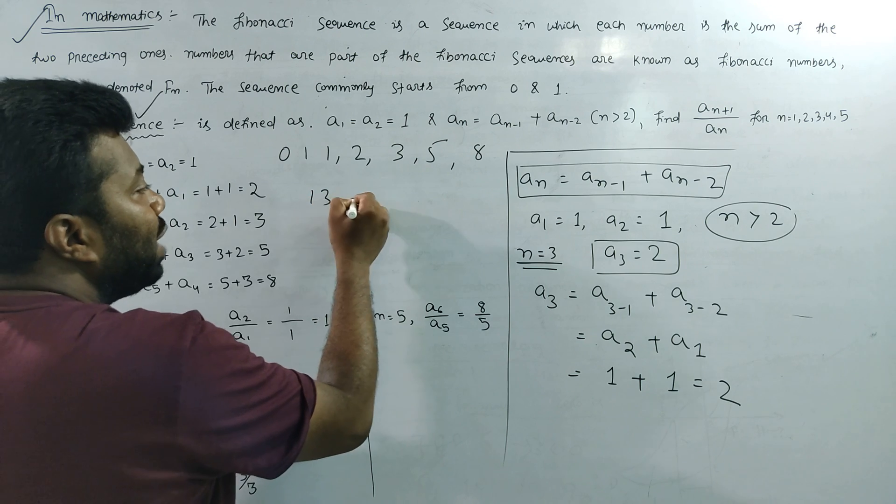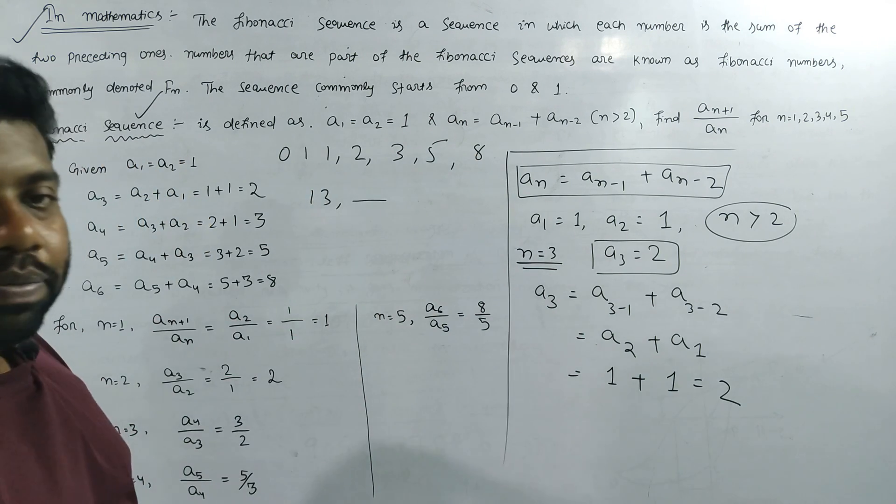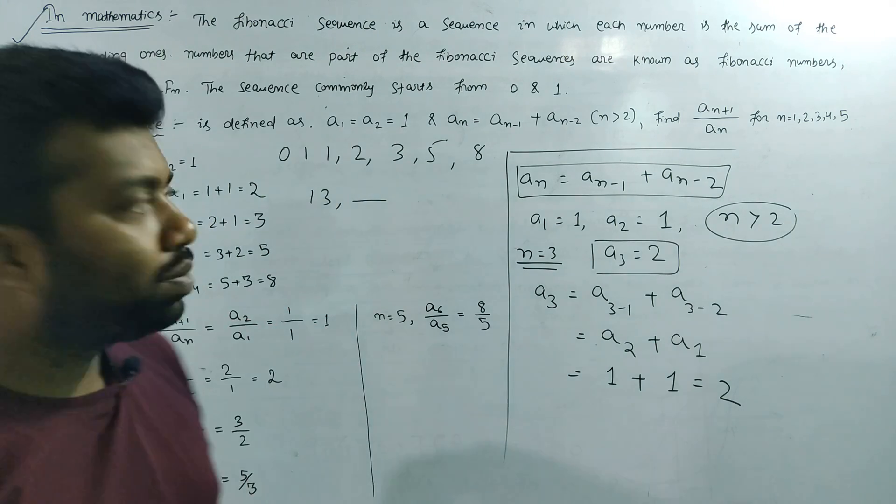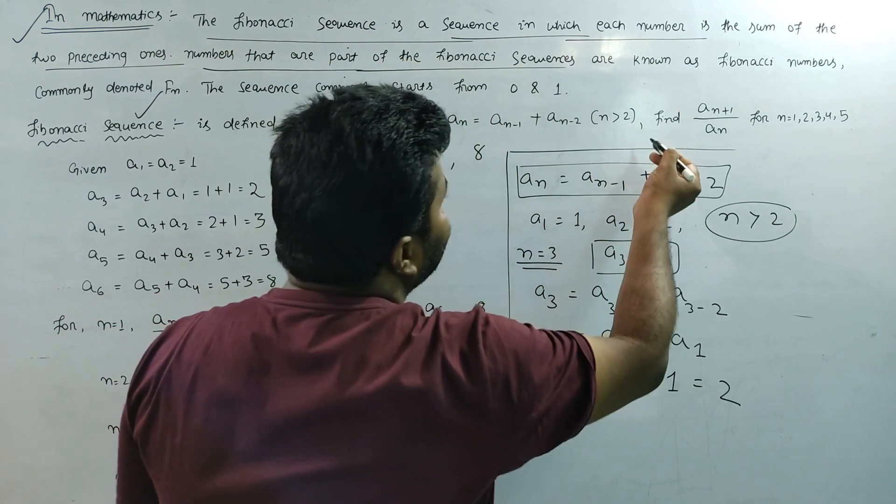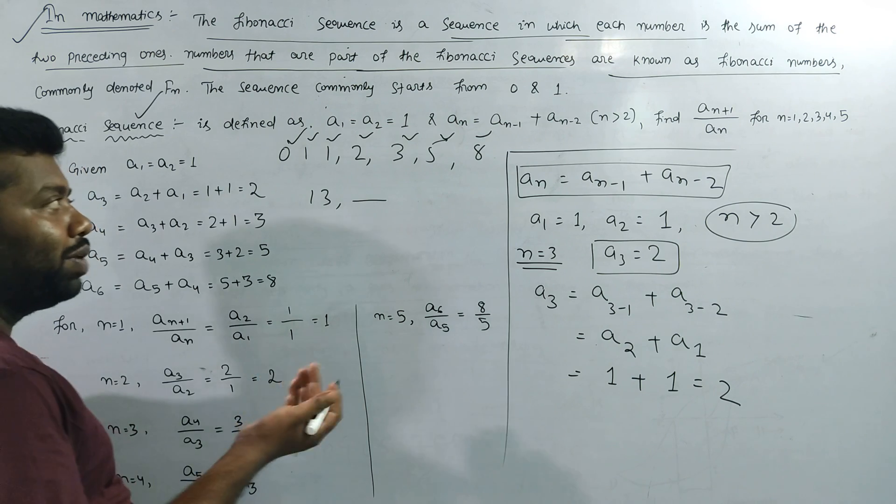Fibonacci number is the sum of two preceding ones. Each number is the sum of the previous two numbers. The numbers that are part of the Fibonacci sequence are known as Fibonacci numbers.